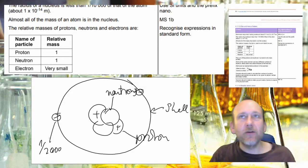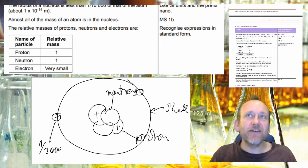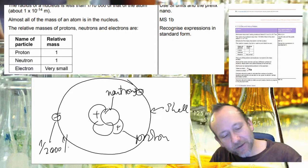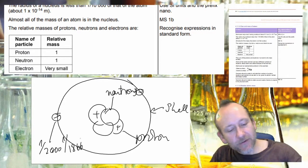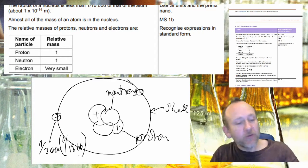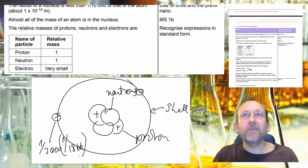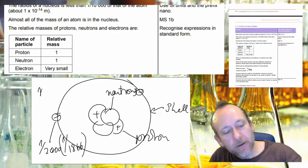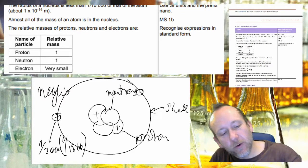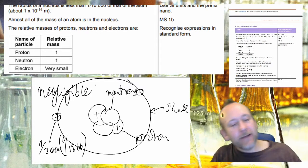And then we've got electrons and they've got one two-thousandths the mass of either a proton or a neutron. Some people say one eighteen hundred and sixty-sixth, it's difficult to say for me especially with a lisp as well. But it says in the specification very small. Another good word to use is negligible—the mass is so small as to almost not matter and that is what we call negligible.